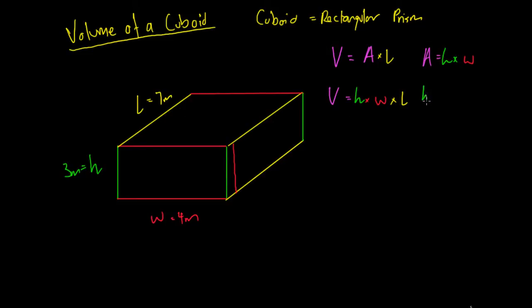So we say our height is equal to three meters, our width is equal to four meters, and our length is equal to seven meters. We merely just substitute them into our formula. So we have three meters times four meters times seven meters. Three times four times seven. Our volume of this shape is just going to be 84 meters cubed.